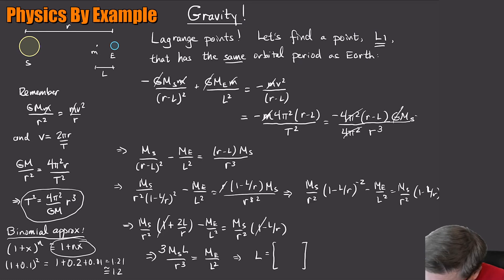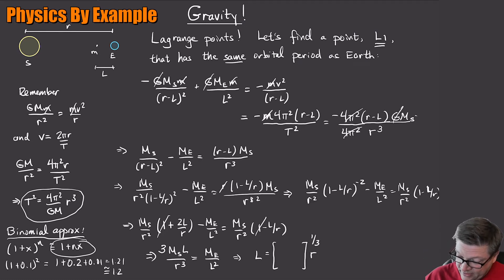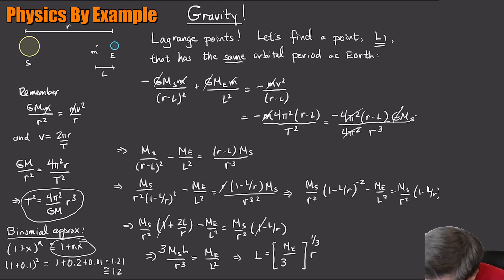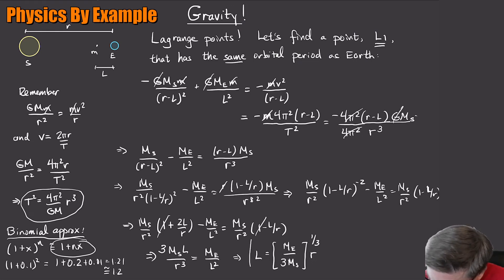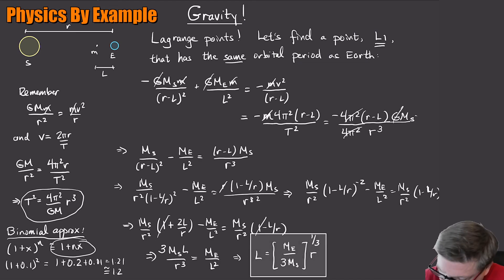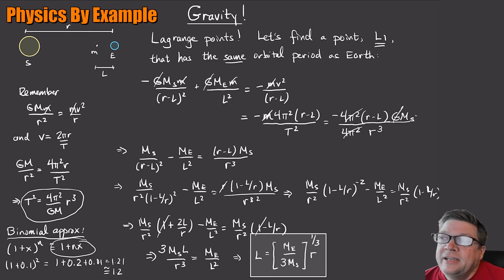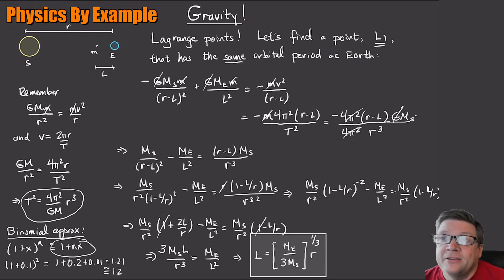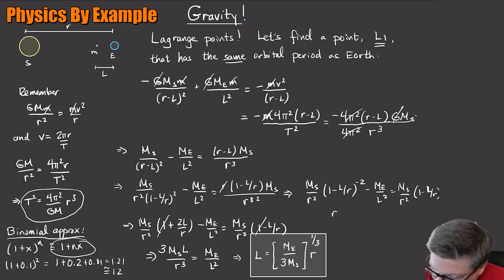Solving for l by taking the cube root, we get l³ = M_E over (3·M_S), so l equals R times the cube root of M_E over (3·M_S). It's an interesting and simple ratio of the masses of the two bodies involved.